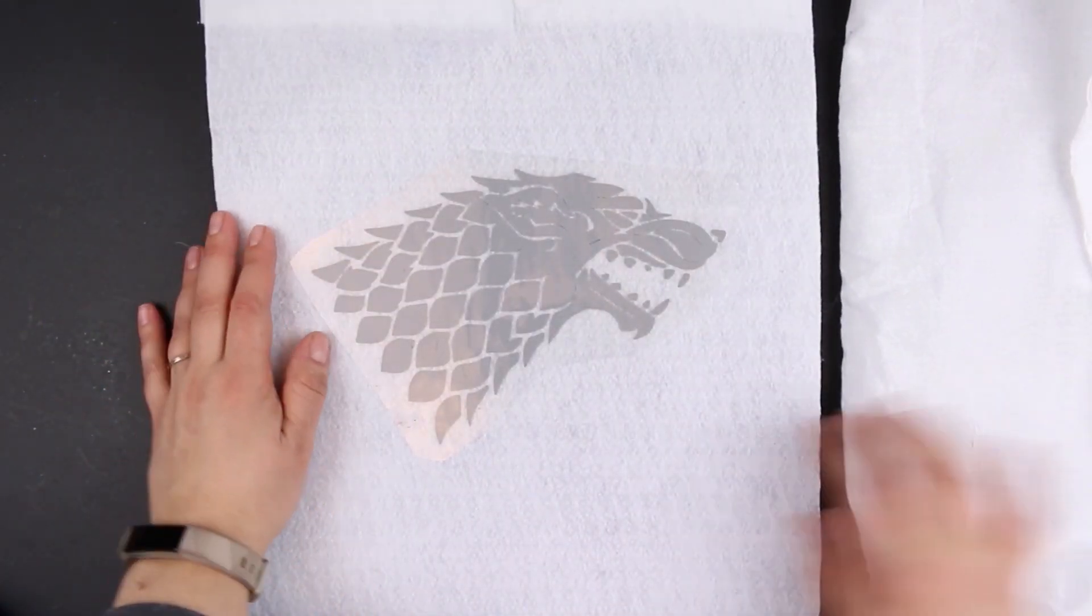After you've ironed the front side of your design, don't forget to heat the bottom side as well. This really makes sure that the iron-on vinyl is securely in place.